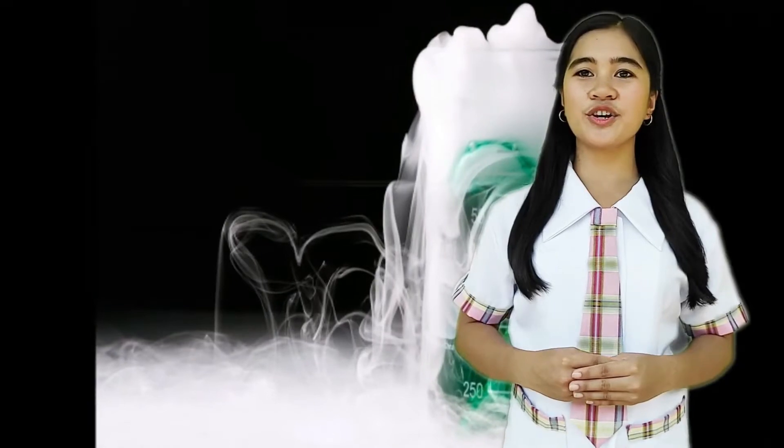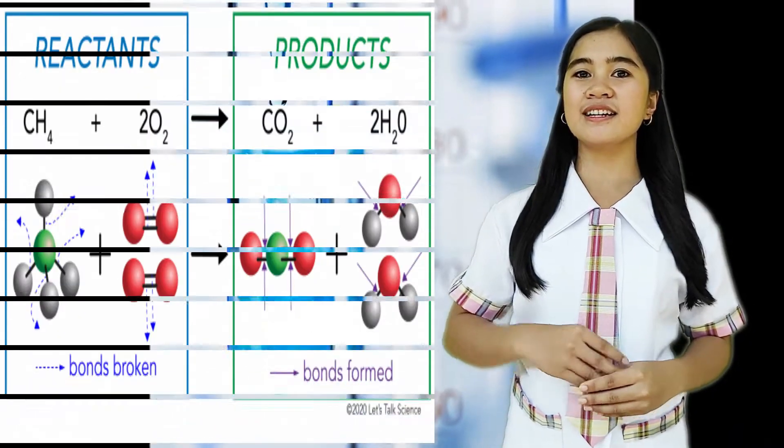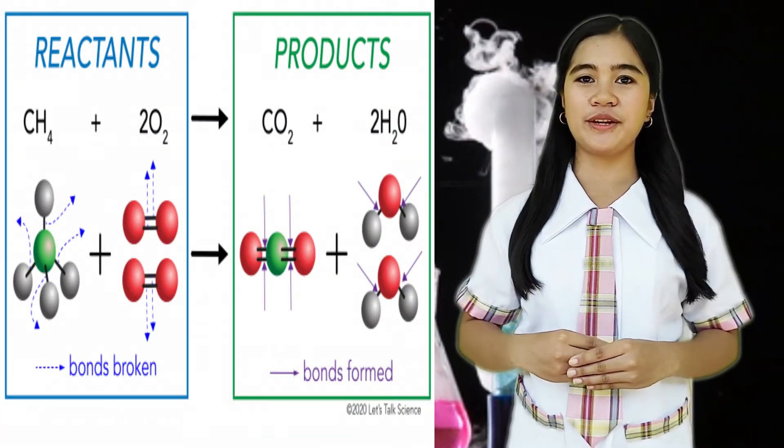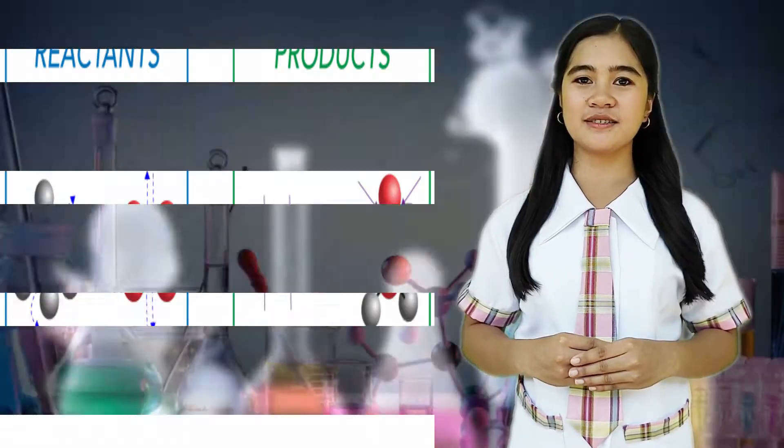The chemical reaction involves a number of reactants plus energy that will produce certain products. Chemical reaction is the reason behind many things in our everyday life. And today, I will show you some examples of chemical reactions that we can see at home.